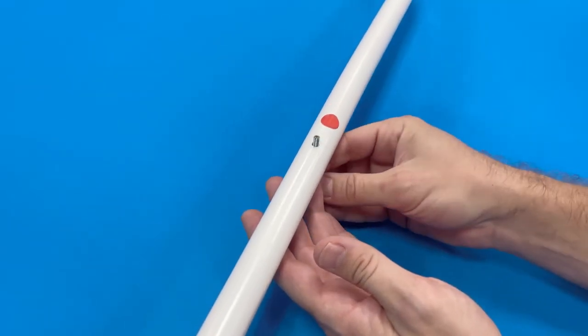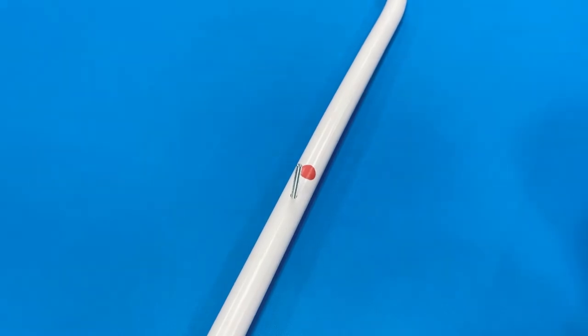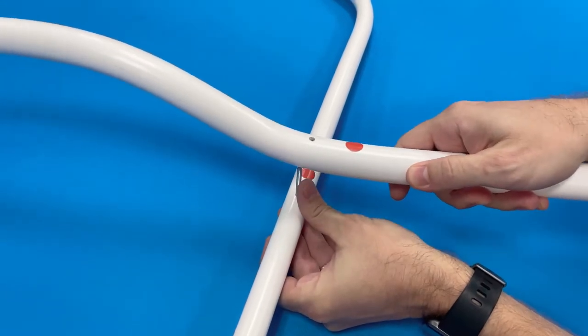Make sure the bolts are inserted through the back of the frame. Attach the curved crossbar to the frame.